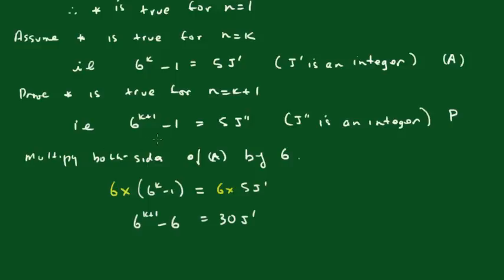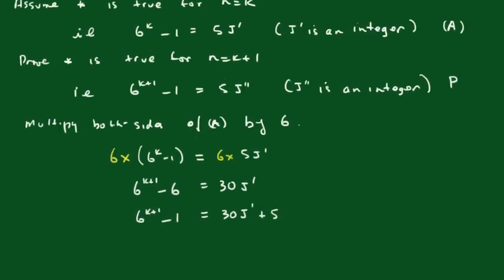Now I want to make the left hand side the same. So I'm going to leave a 1 on this side and take a 5 across the other. So I get 6 to the k plus 1 minus 1 equals 30j dash plus 5 by adding 5 to both sides. Alright, so now we've got the left hand side the same. We take out a common factor of 5 and we get 6j dash plus 1.